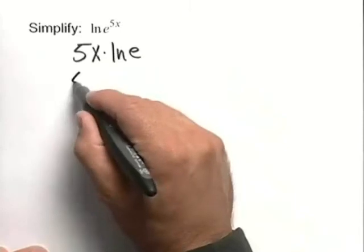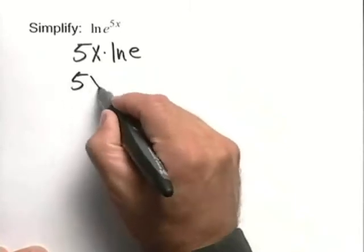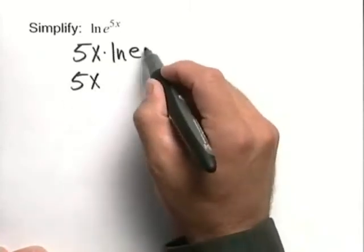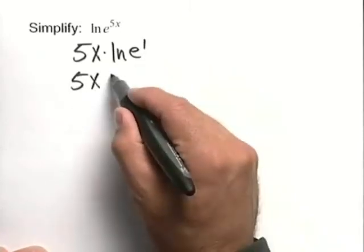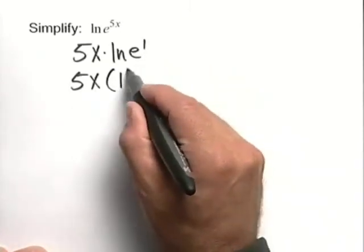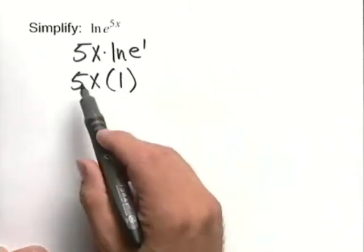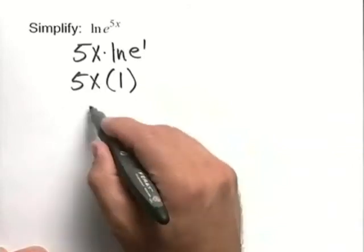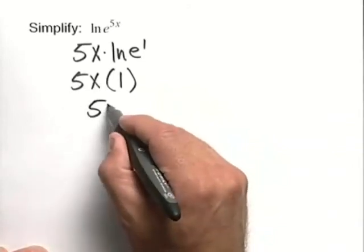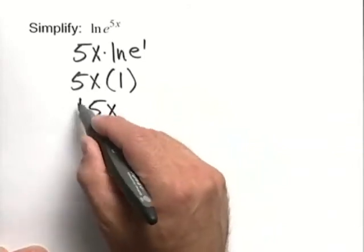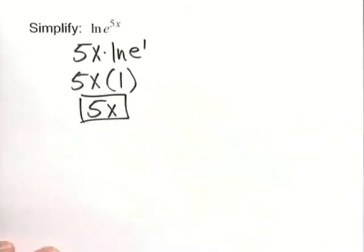By definition of inverse functions, the natural log of e to the first power is simply 1. So we have 5x times 1, and we've simplified this completely to end up with 5x as our answer.